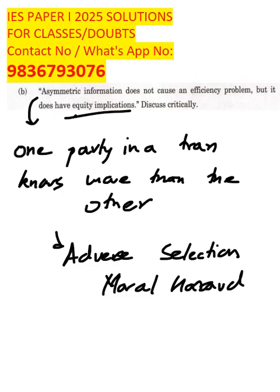Why not an efficiency problem always? Market still function. Why? Because transactions can still take place.